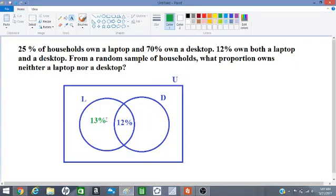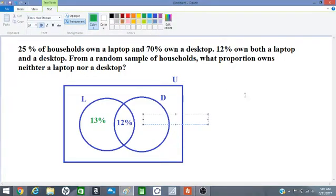And 70% own a desktop, so we need to subtract 12 from 70. And we will have 58% over here.